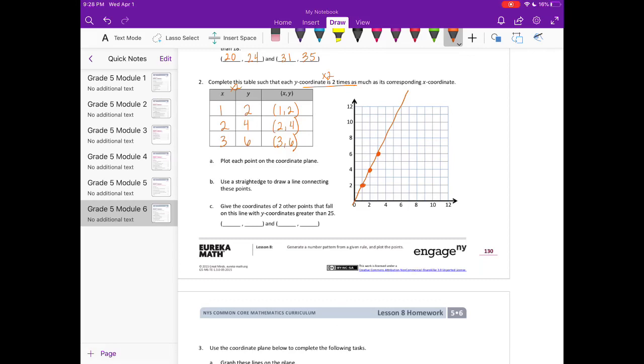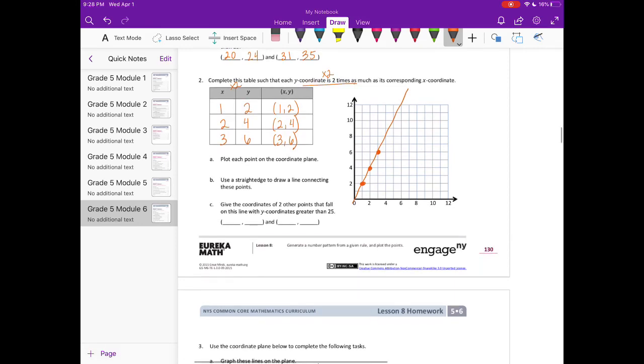Give the coordinates of 2 other points that fall on this line with y-coordinates greater than 25. So if I choose 26 as my y-coordinate, the x-coordinate is going to be half of that, because we're doing x times 2. So half of that is 13, because 13 times 2 is 26. If I choose a y-coordinate of 30, then my y would be 15, because 15 is half of 30.